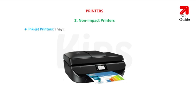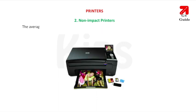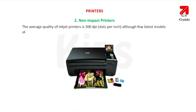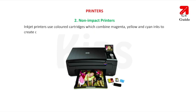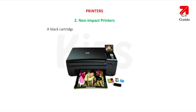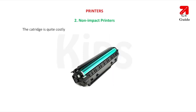Inkjet printers produce images by spraying tiny droplets of ink onto the paper. They have very high-quality output and can also produce colored graphics. These printers are less noisy. The average quality of an inkjet printer is 300 dpi (dots per inch), although a few latest models offer higher resolutions. Inkjet printers use colored cartridges which combine magenta, yellow and cyan inks to create color tones. A black cartridge is also used for crisp monochrome output. They are cheap and ideal for home or office, however the cartridge is quite costly and needs to be replaced more frequently than a laser printer.